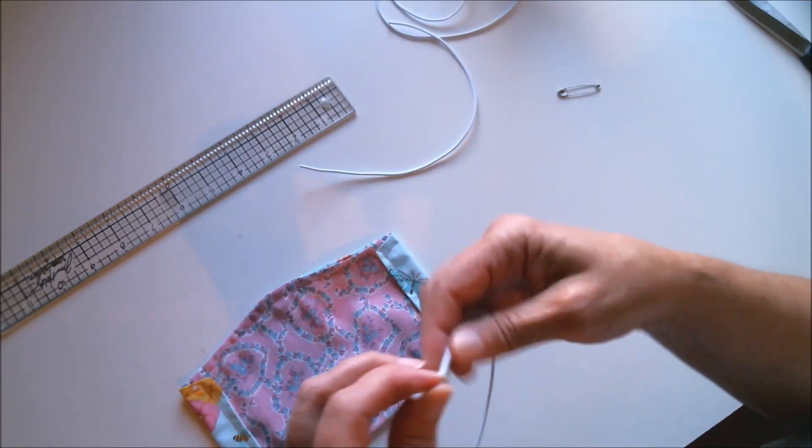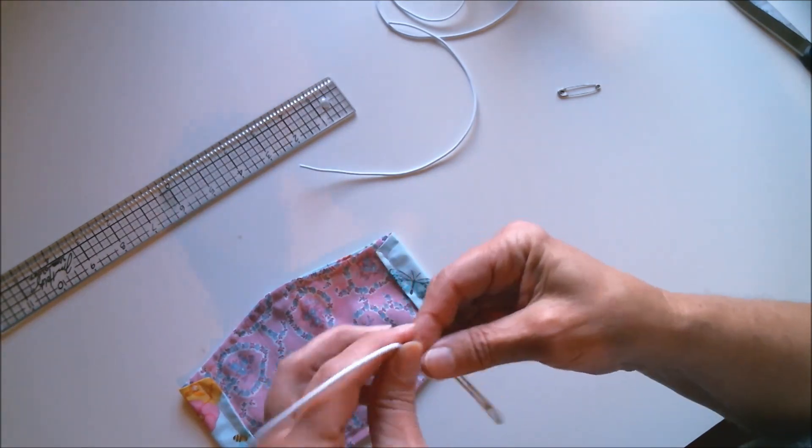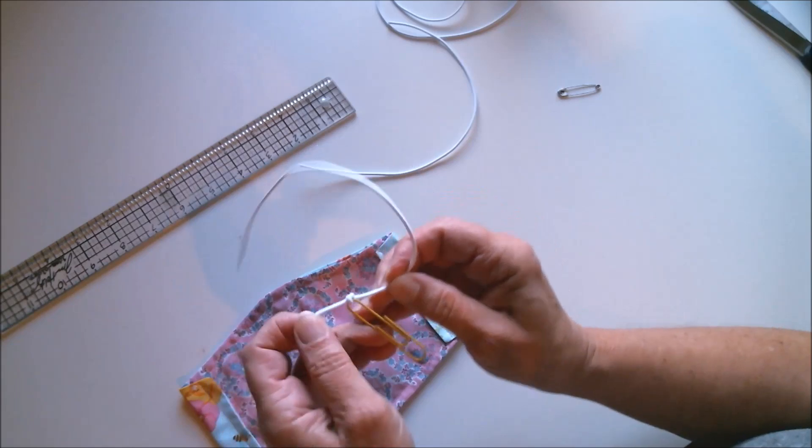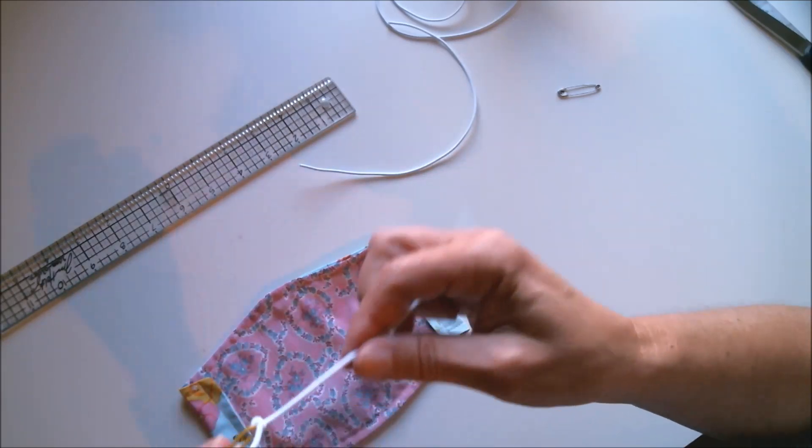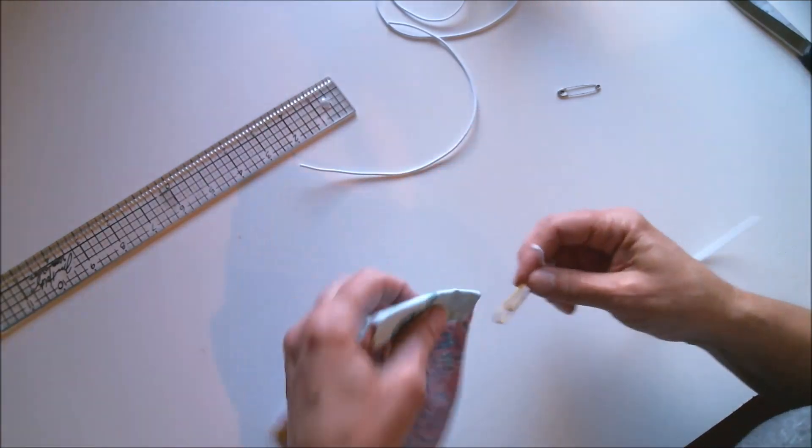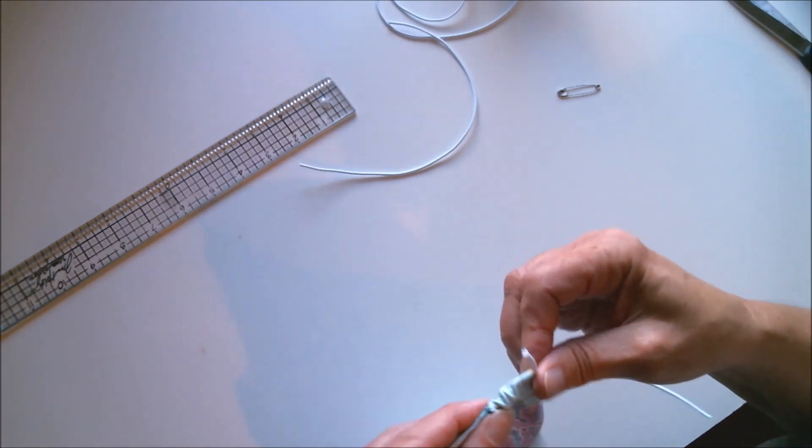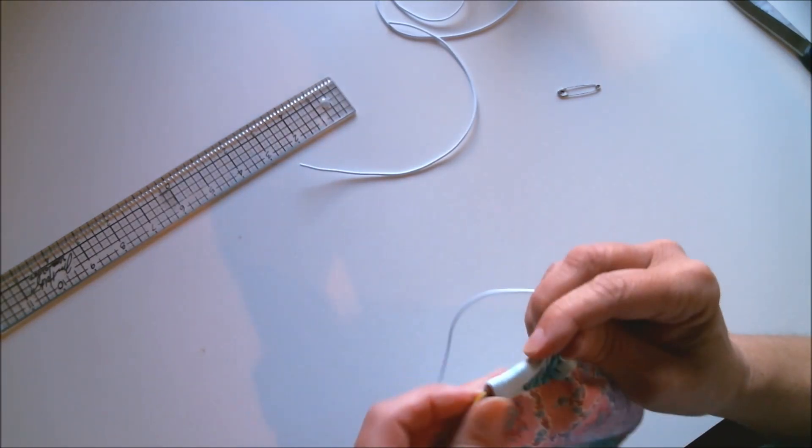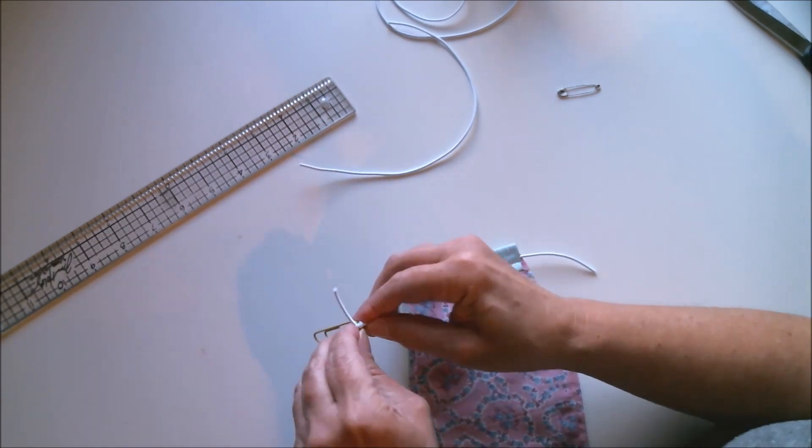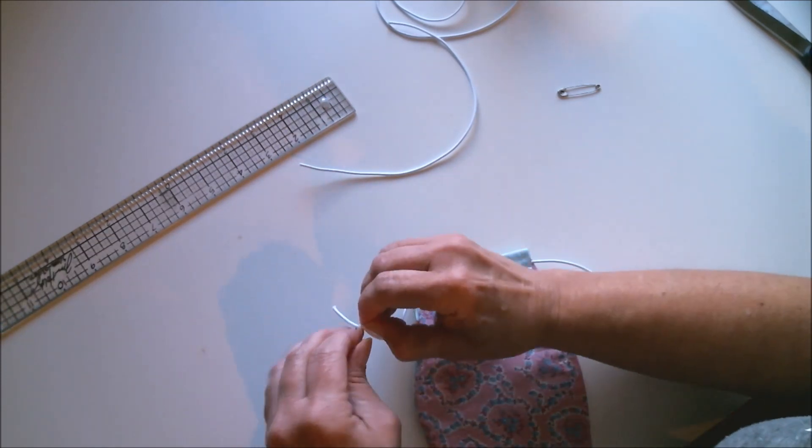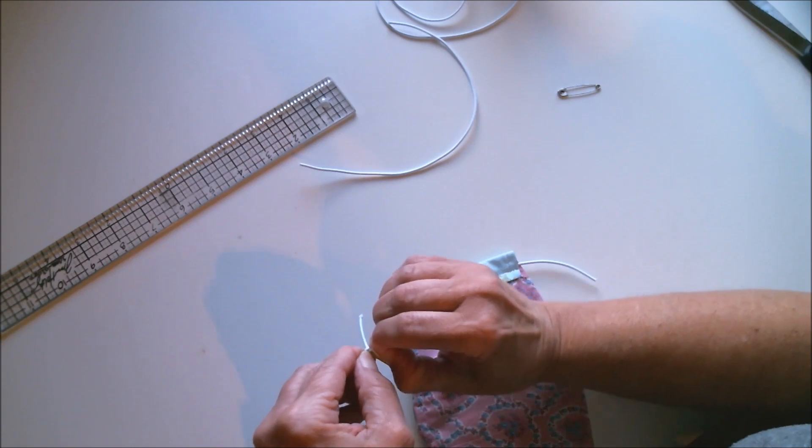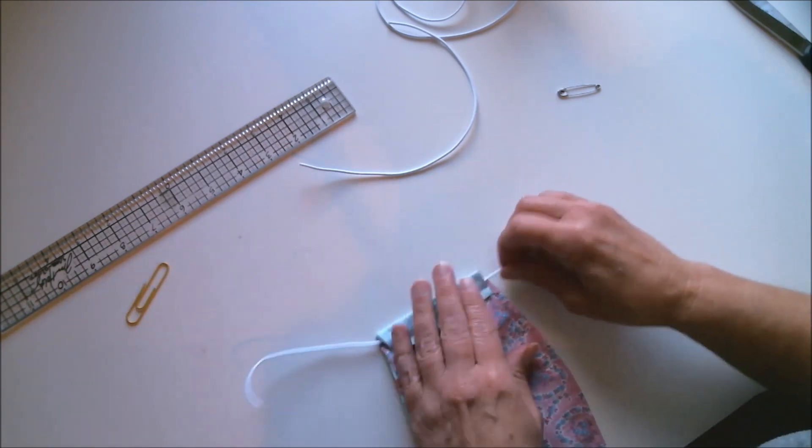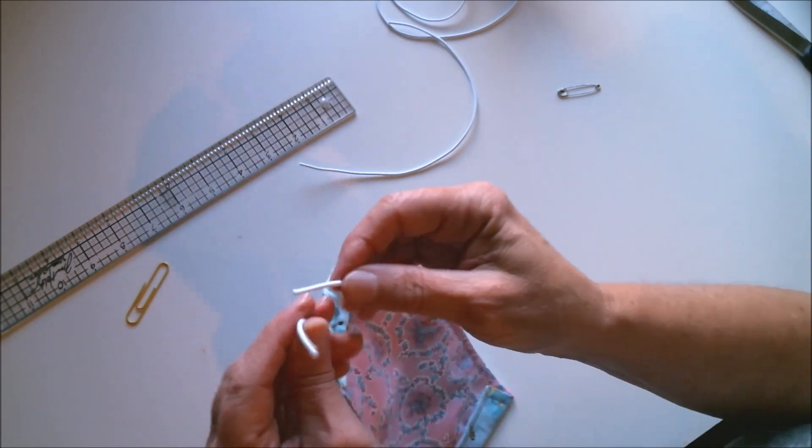Now to thread those elastics through those tunnels, you can use a paper clip or a safety pin. I like using a paper clip and it's just really easy because you just kind of tie it on one end and slide it through that little tunnel. I know that there are some of you that would have sewn it in or laid it in there before they sewed it, but for me this is so much easier. You do it however is the easiest for you.